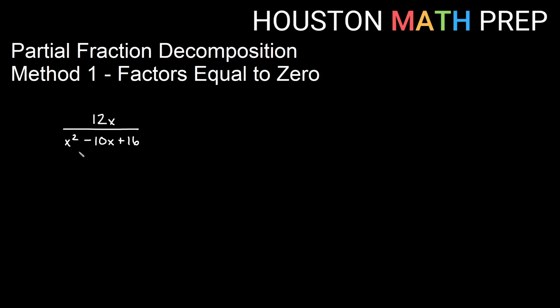So I have 12x over x squared minus 10x plus 16. I have more power on the bottom than I do on the top to start with in my original, so I can use partial fraction decomposition, and I can also factor the bottom, and that's another indicator that we can use partial fraction decomposition. So if I factor, if you think for a second about factoring x squared minus 10x plus 16, you might come up with x minus 8 times x minus 2.